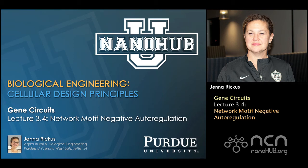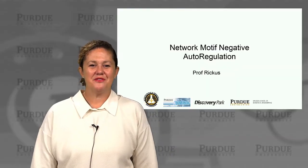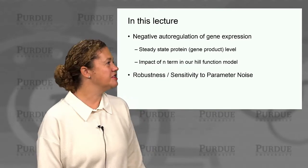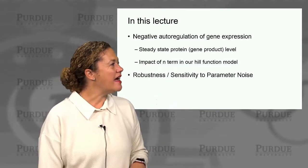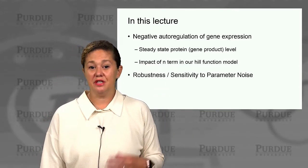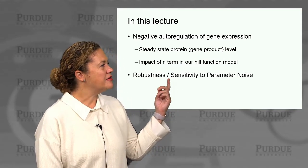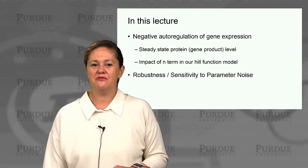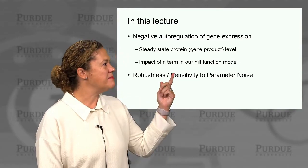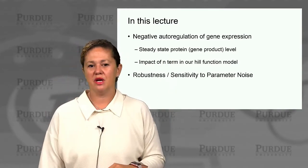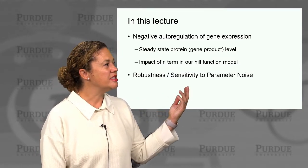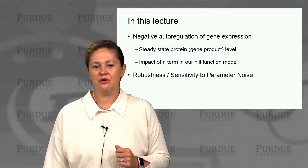Welcome back. I'm Professor Rickus. In this lecture we're going to talk about negative auto regulation of gene expression. We'll look at the steady state protein level, the gene product level, and the impact of the n parameter in our Hill function model of expression. We'll talk about the impact of that in a negative auto regulation model, and how that leads to robustness, and look at the sensitivity to parameter noise.